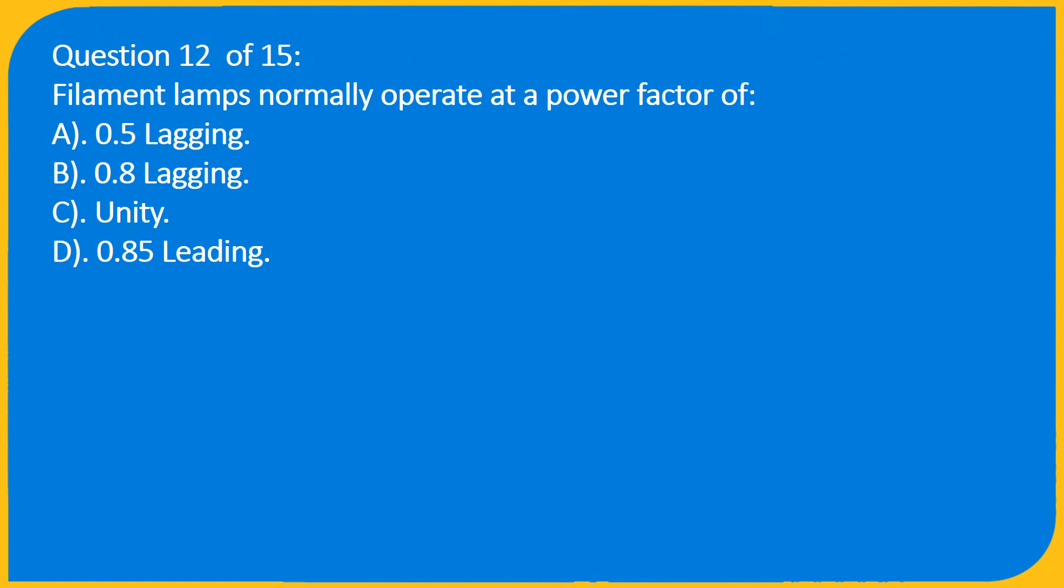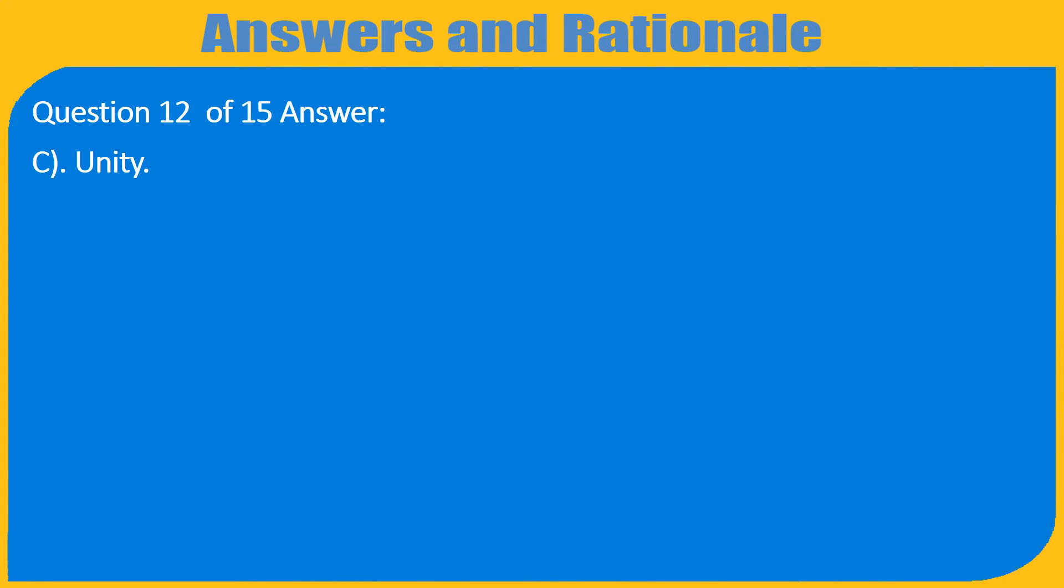Question 12 of 15: Filament lamps normally operate at a power factor of A. 0.5 lagging, B. 0.8 lagging, C. Unity, D. 0.85 leading. Answer: C. Unity.